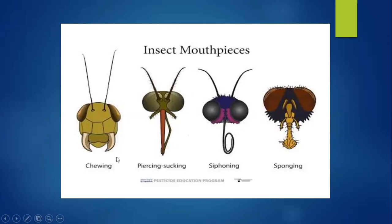Chewing type mouthparts represent the simplest or basic type. Parts of the mouthparts get modified for a particular kind of food they take. When you look at the piercing and sucking insect, there is a modified structure that helps in piercing and sucking.